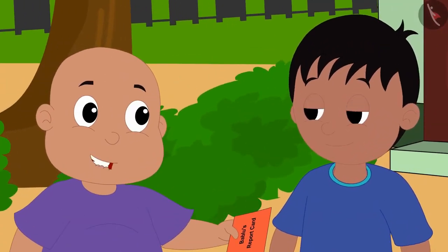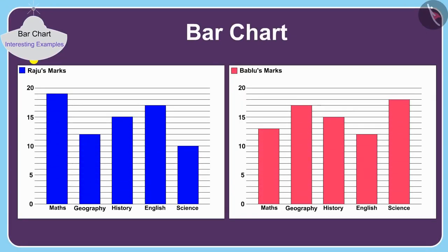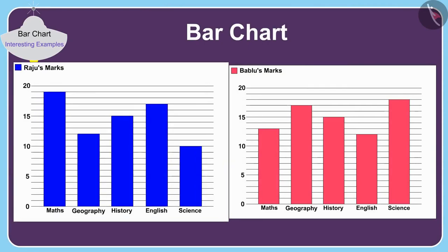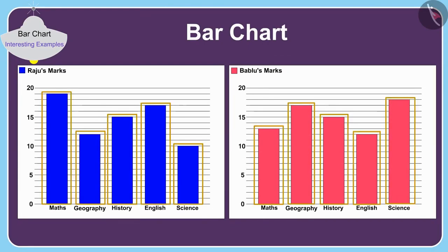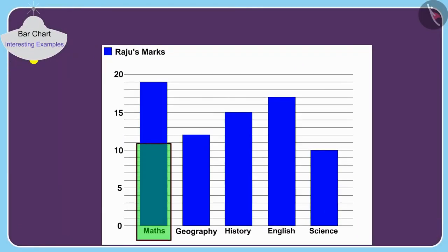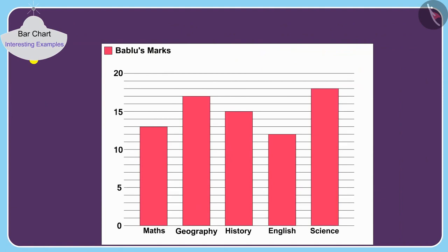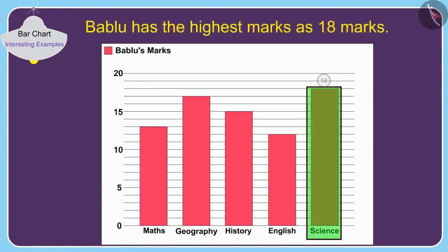Raju and Babalu made bar charts of the marks they scored. Can you tell which subjects have Raju and Babalu got the highest marks in? The highest rectangle in Raju's bar chart is in mathematics. So Raju has scored the highest marks — 19 marks. And the highest rectangle in Babalu's bar chart is in science. So Babalu has the highest marks — 18 marks.